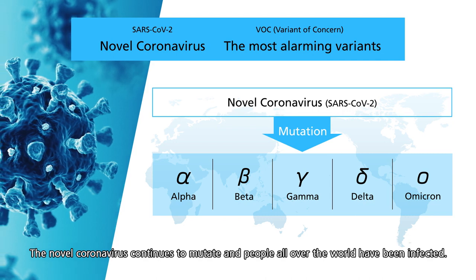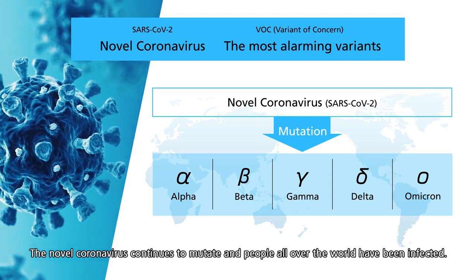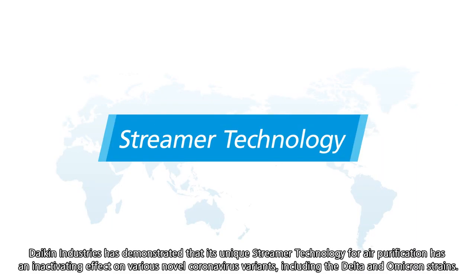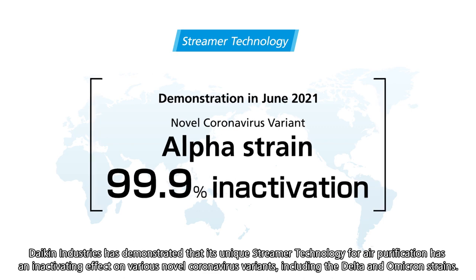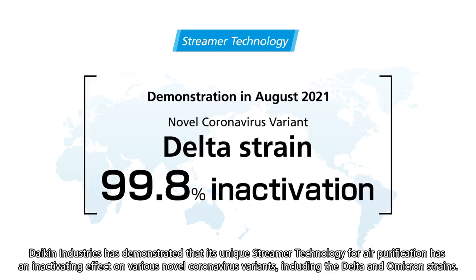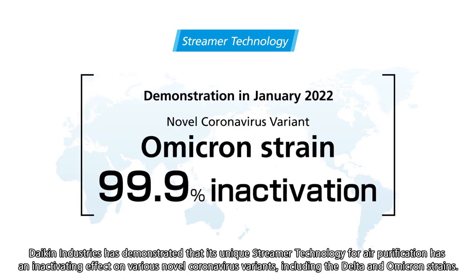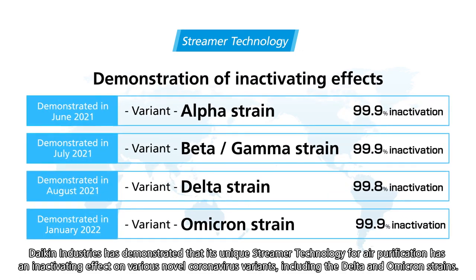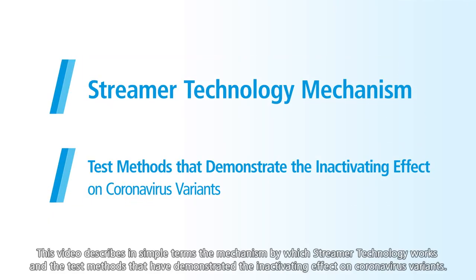The novel coronavirus continues to mutate and people all over the world have been infected. Daikin Industries has demonstrated that its unique streamer technology for air purification has an inactivating effect on various novel coronavirus variants, including the Delta and Omicron strains. This video describes in simple terms the mechanism by which streamer technology works and the test methods that have demonstrated the inactivating effect on coronavirus variants.